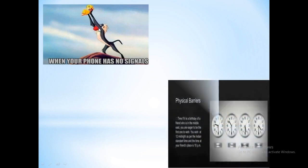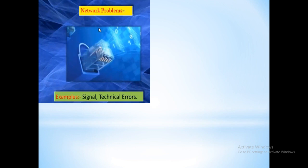Next is the time barrier. India's time and a foreign country's time are different. When it is night for us in India, it may be daytime elsewhere. If your friend abroad wants to talk to you, but it is night here, they cannot call you — this timing difference prevents communication. This is called a timing barrier. For example, network problems due to technical errors also cause communication barriers.